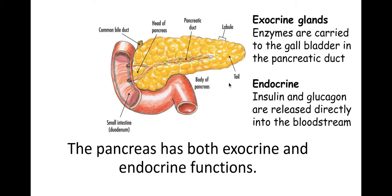So let's remind ourselves of what those terms mean. Exocrine is where products such as enzymes or hormones are carried via ducts. In the pancreas we have enzymes that are carried to the gallbladder via the pancreatic duct. It's also considered an endocrine organ because we have insulin and glucagon hormones which are made in the pancreas and these are released directly into the bloodstream.